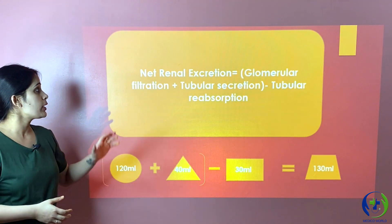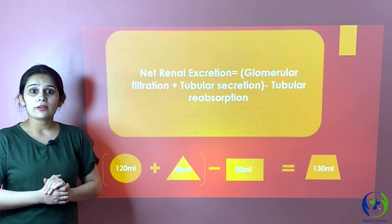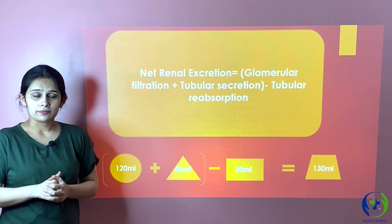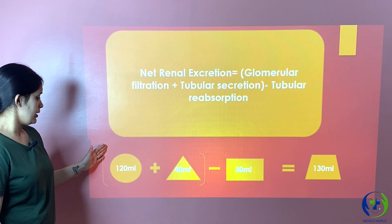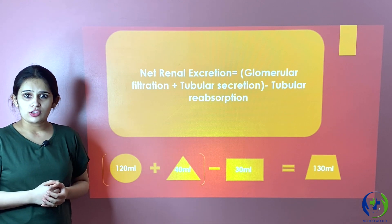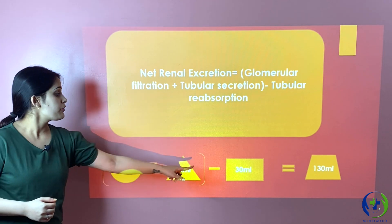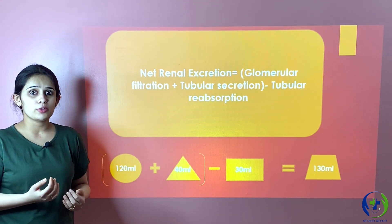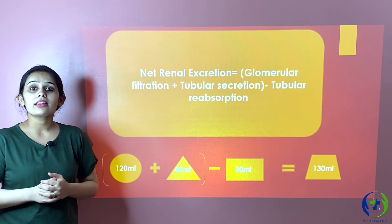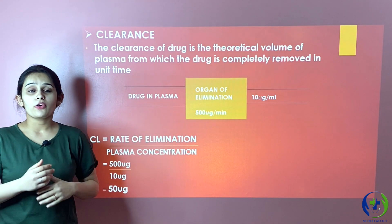After studying all three processes, we get one equation: net renal excretion equals glomerular filtration plus tubular secretion minus tubular reabsorption. For example, if 120 ml is the glomerular filtrate and 40 ml is obtained from tubular secretion, that gives 160 ml. If 30 ml is then reabsorbed through tubular reabsorption, what remains is 130 ml — so 130 ml is the net renal excretion.